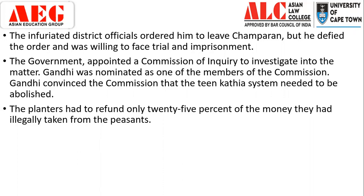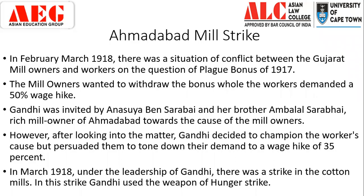The next movement Gandhi started was the Ahmedabad Mill Strike — moving from a rural setup to a more urban setting. In February and March 1918, there was a conflict between Gujarat mill owners and workers over the question of a plague bonus, which was nearly 80% of their salary. The mill owners, citing wartime conditions, decided they were not going to give the plague bonus. With the withdrawal of the plague bonus, the workers demanded their salary be hiked by 50%, which created a rift between the workers and the mill owners. Ahmedabad was one of the largest industrialised areas of the subcontinent.